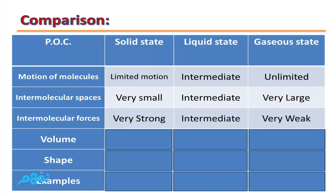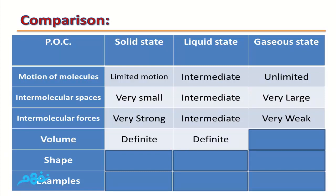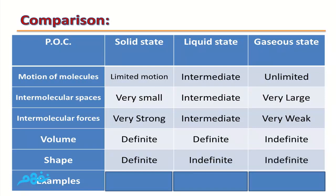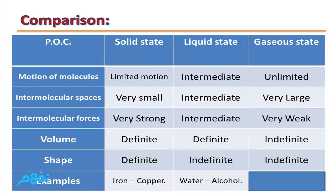Regarding volume: solids have definite volume, liquids have definite volume, gases have indefinite volume. Regarding shape: solids have definite shape, liquids have indefinite shape, gases have indefinite shape. Examples for solid state: iron, copper, aluminium. Liquids such as water and alcohol. Gases such as carbon dioxide and oxygen.